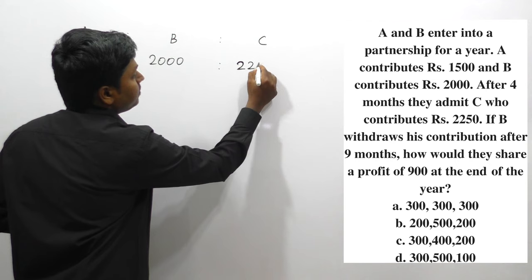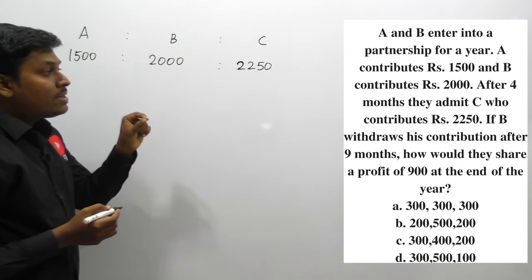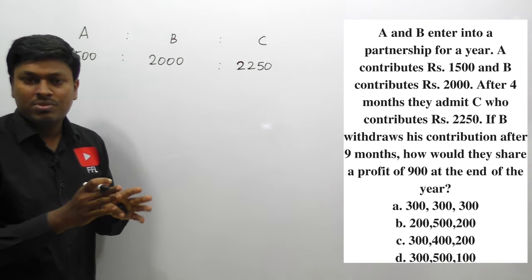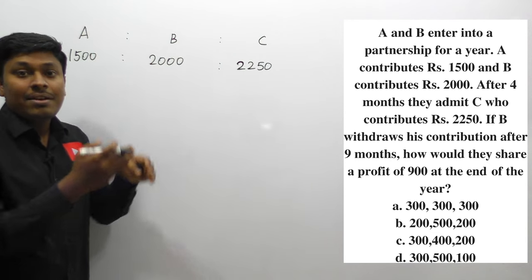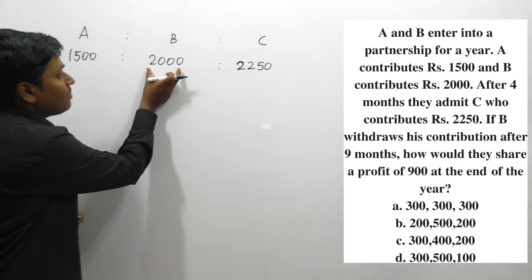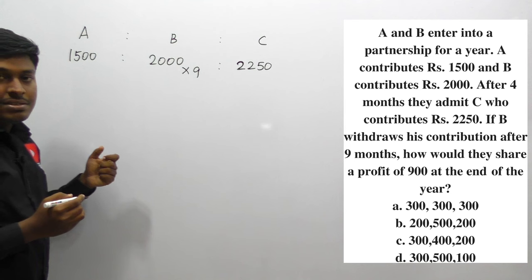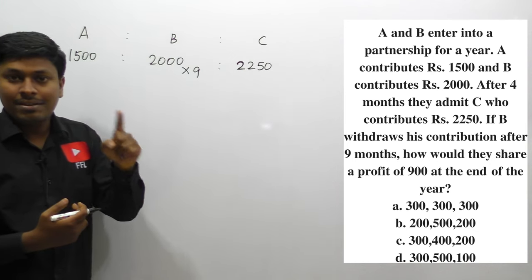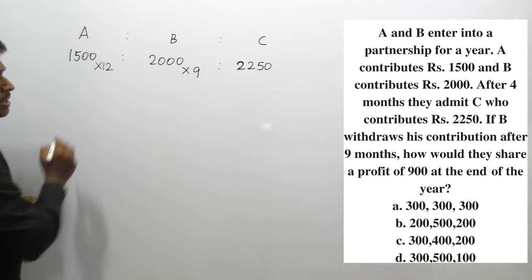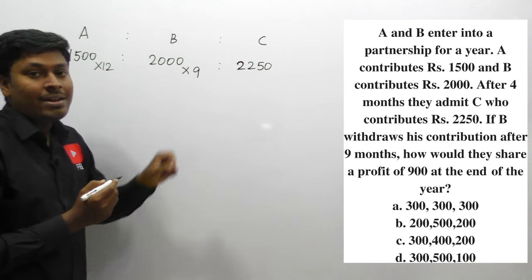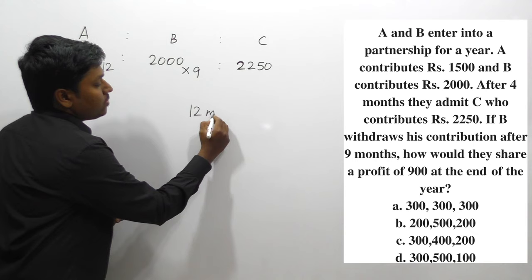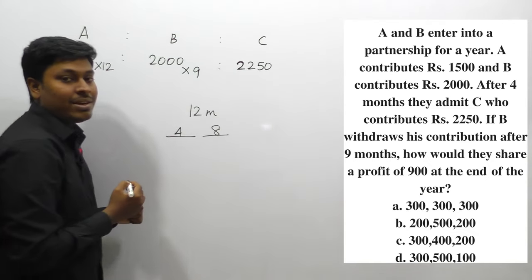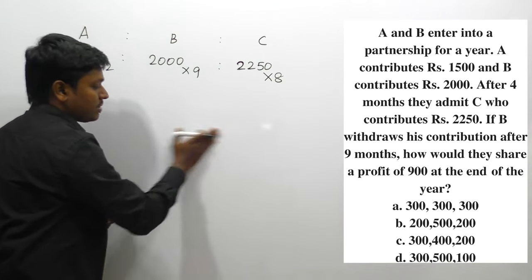B withdraws after 9 months, so B is in the business for only 9 months, investing 2,000 × 9. Person A is in the business for the complete 12 months, investing 1,500 × 12. Person C joined after 4 months, so C is in the business for 12 − 4 = 8 months, investing 2,250 × 8.